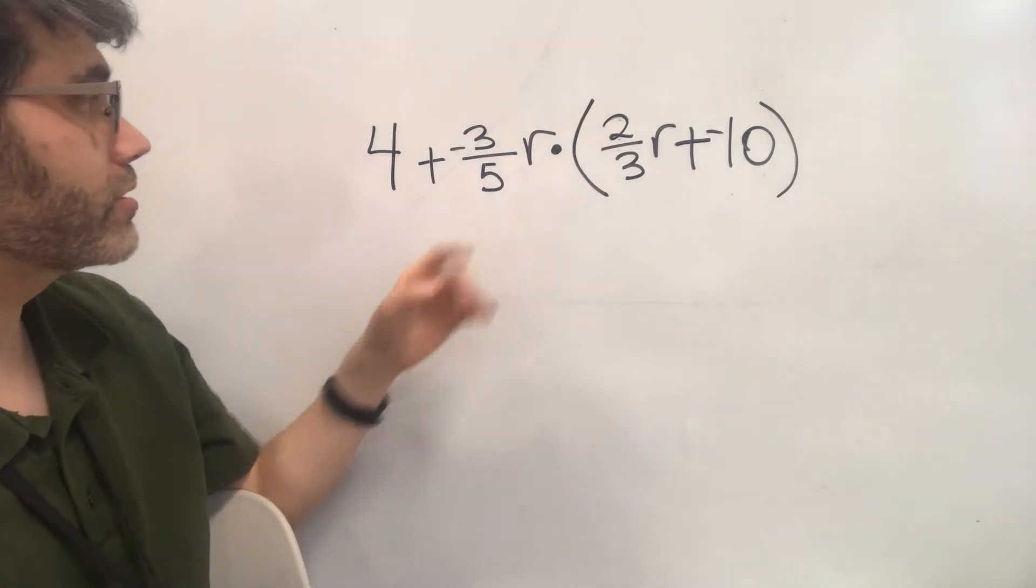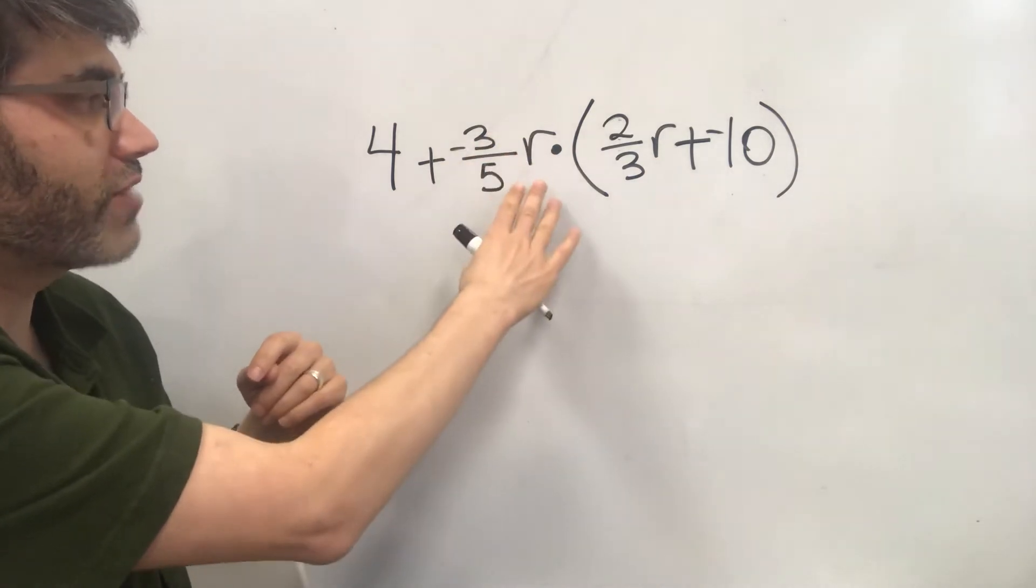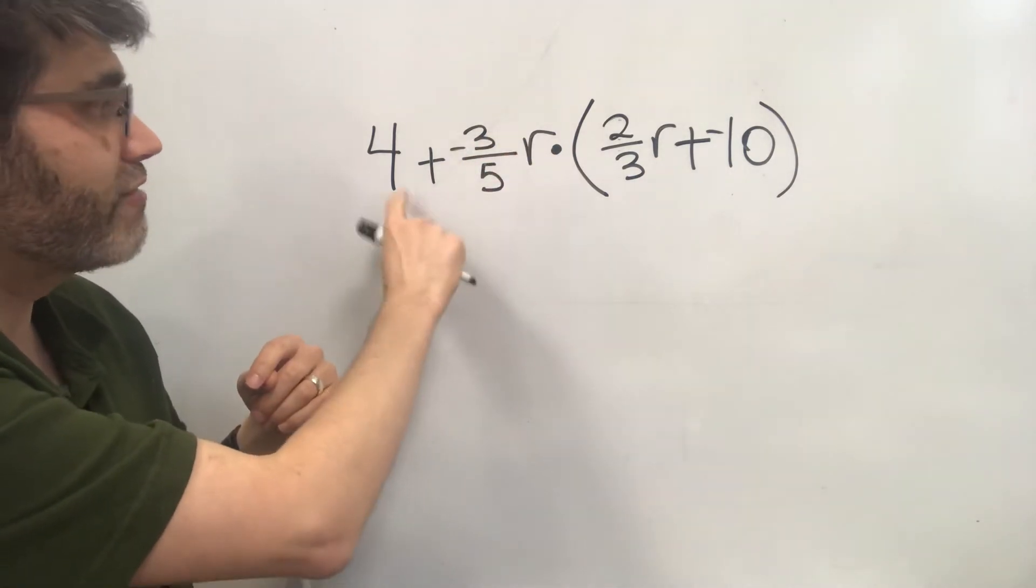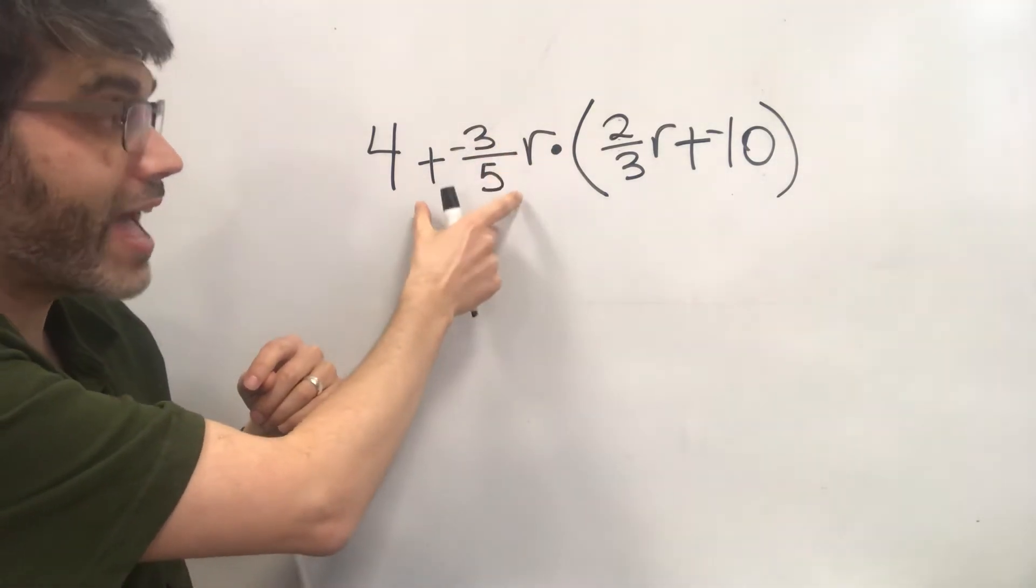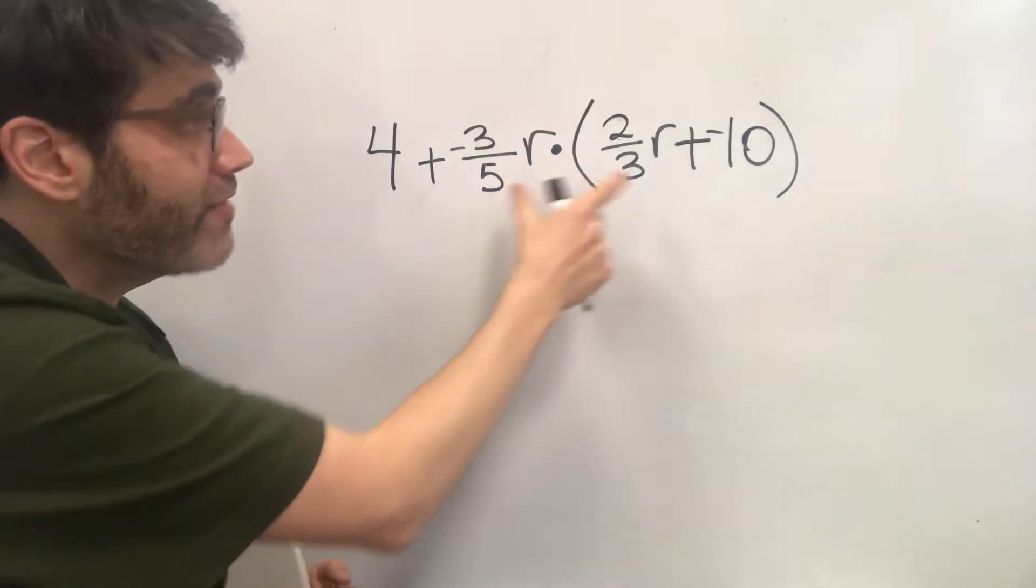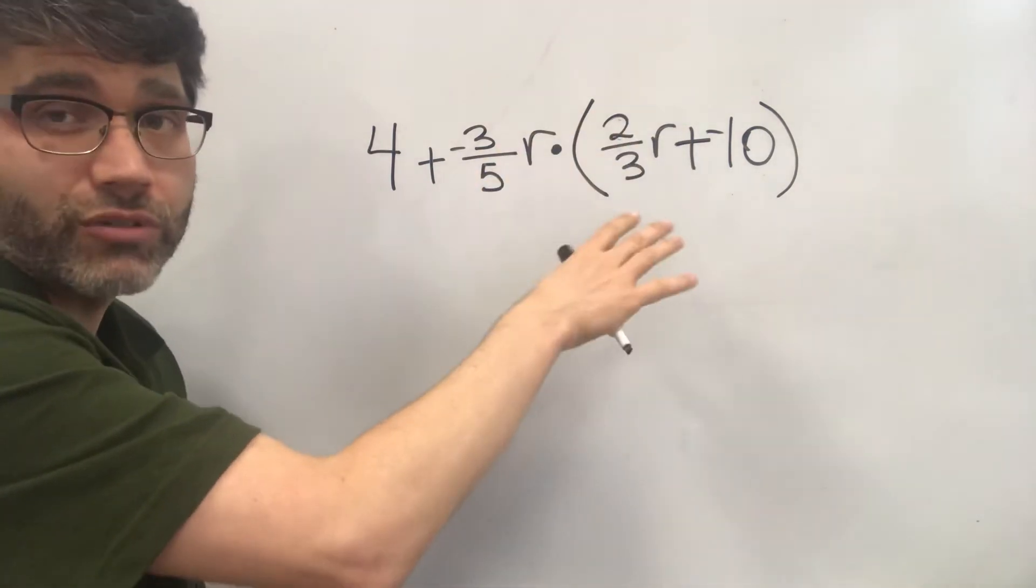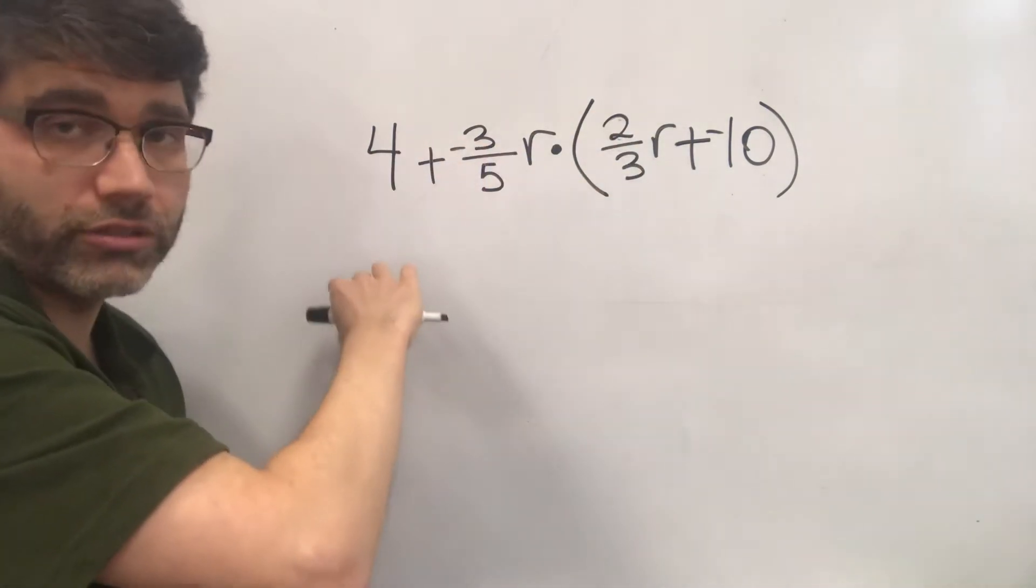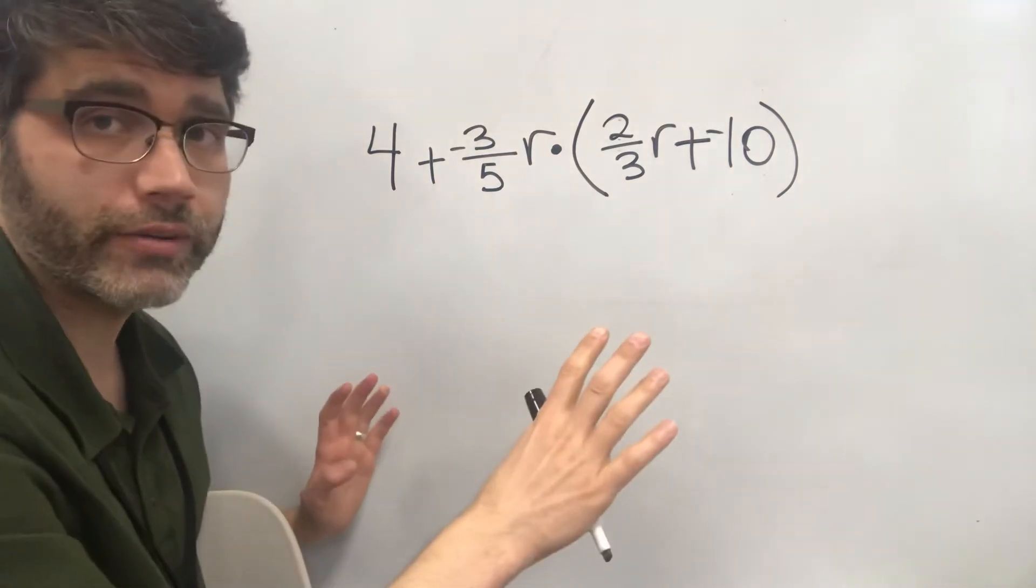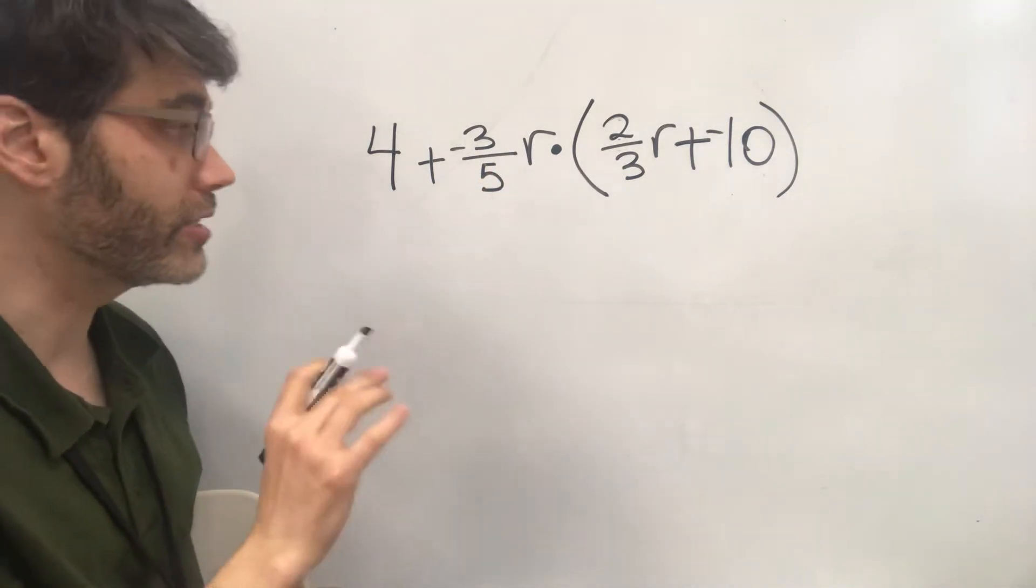So even if this was like five right here, instead of all this, it was just five, it would be very tempting to add four plus five and then take that nine and multiply it times all this. That is not what you do. You have to multiply these first and then whatever you get that's left over, then you can add it to the four. But not the other way around. So those are the two very important things that I would very much insist on you doing.